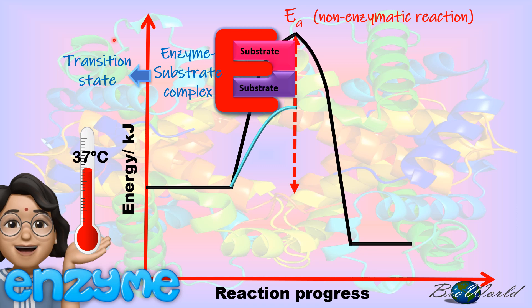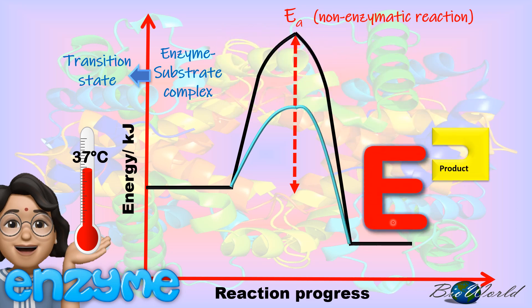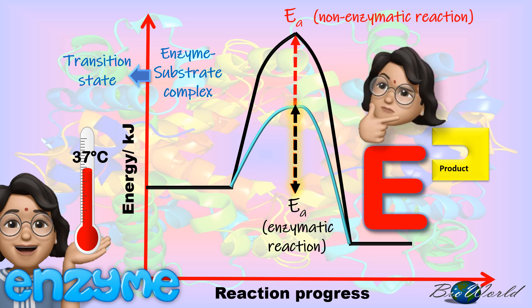So, earlier when we discussed the non-enzymatic reaction, the reaction had to absorb a lot of heat to reach a high activation energy before reaching the transition state. But now the enzyme enables the substrates to reach a transition state at a low temperature of 37 degrees Celsius. During the transition state, bonds between the substrates will be broken and new bonds will be made to produce a product, which then returns to a low energy level. So you can clearly see that in an enzymatic reaction, the activation energy required for the reaction to be completed is much lower.